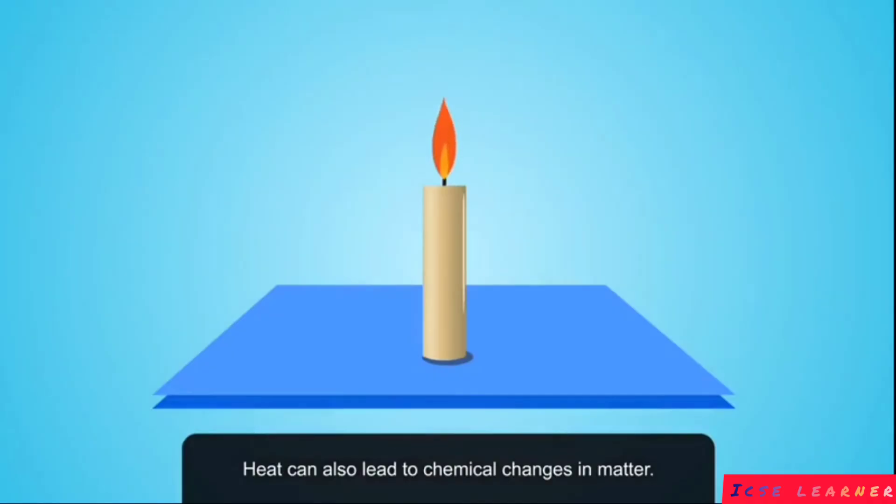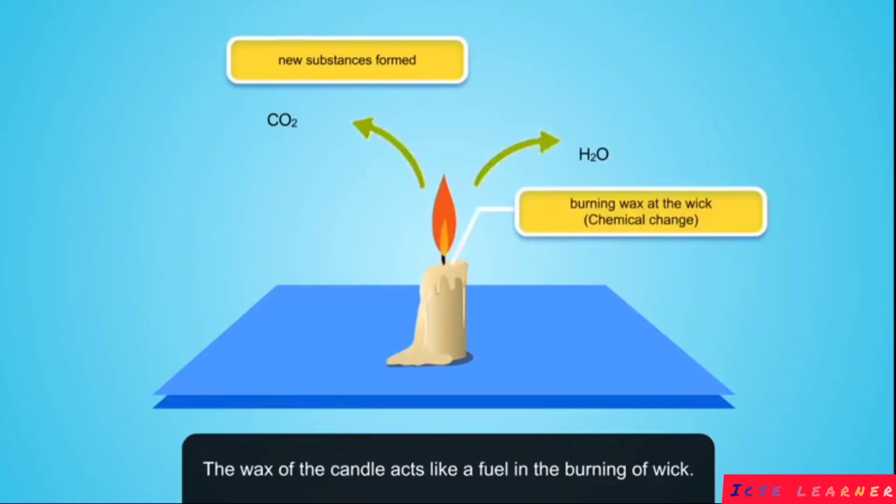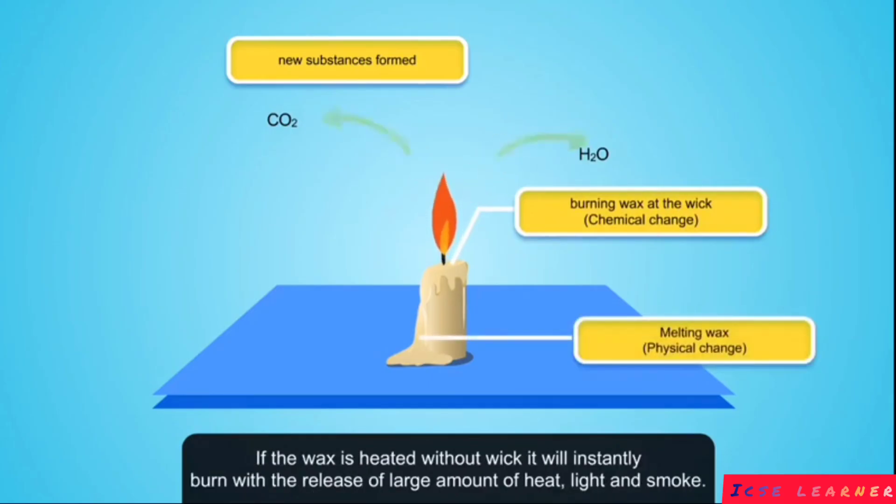Heat can also lead to chemical changes in matter. The burning of a candle wick is a chemical change producing new substances. The wax of the candle acts like a fuel in the burning of wick. This burning produces carbon dioxide and water vapor along with heat and light from wax.